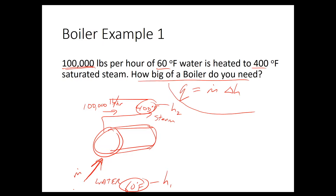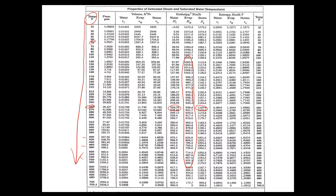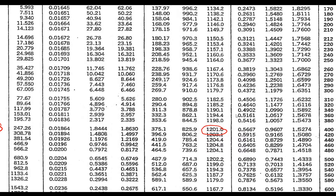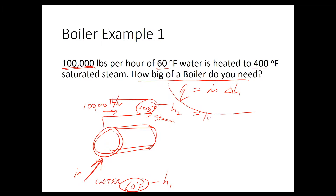Going to the steam tables, at 60°F the enthalpy is 28 BTU per pound (H initial). The enthalpy final at 400°F saturated steam is 1201 BTU per pound. So our mass flow rate is 100,000 pounds per hour and ΔH is 1201 minus 28, which equals 1173 BTU per pound. Multiplying these together — pounds cancel — gives Q in BTU per hour.